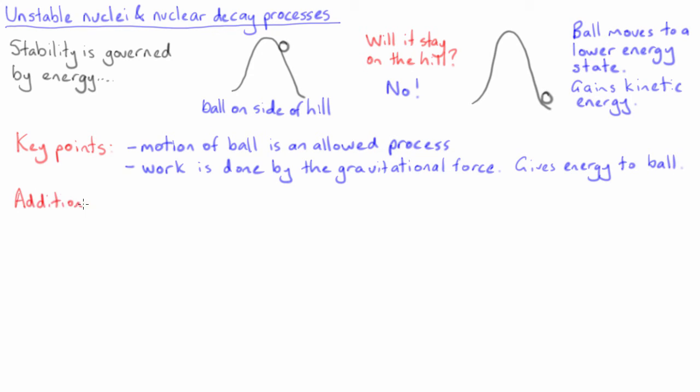The stability of nuclei is governed by similar considerations, with one very important extra point. That is the equivalency between mass and energy that was first formulated by Einstein in 1905. This is perhaps his most famous equation, E equals mc squared.